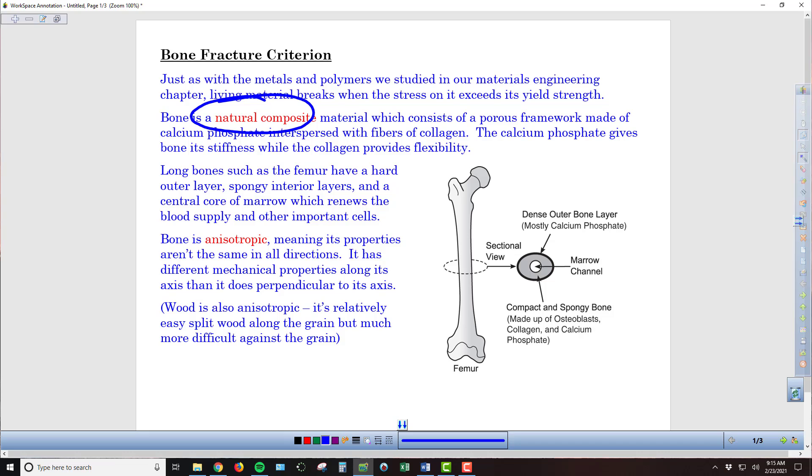It consists of a porous framework that's made up of calcium phosphate, and then there are fibers of collagen that are interspersed within it. It's the calcium phosphate that gives the bone its stiffness and its strength, and the collagen that provides flexibility.